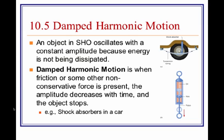In damped harmonic motion, energy is dissipated or removed from a system. Friction, air resistance, or some other non-conservative force removes the energy, and therefore the amplitude decreases over time. A common example would be a shock absorber in your car, which removes the amount that your car bounces up and down after it goes over a bump. Energy is lost to friction.